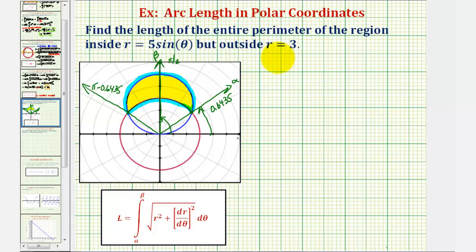Now as we mentioned earlier, this is actually two arc lengths based upon the two equations. So let's find r and dr d theta for both equations. If we have r, let's call it r sub one, equals five sine theta, notice that dr sub one d theta would be equal to five cosine theta.